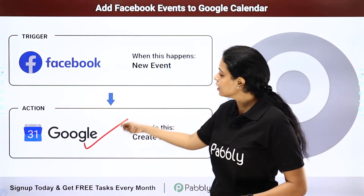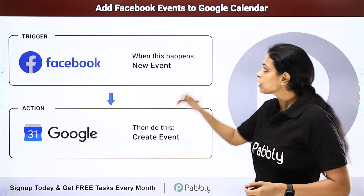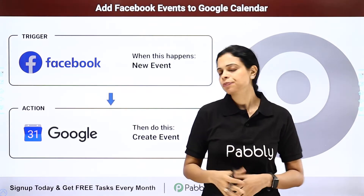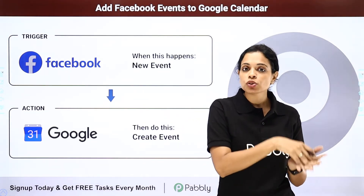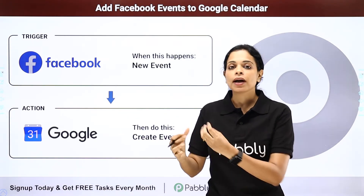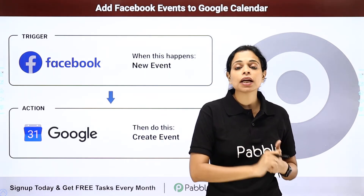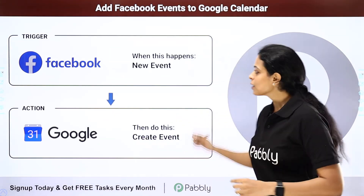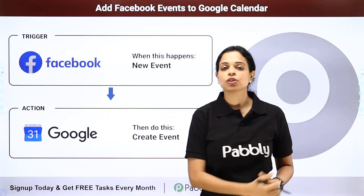The last one is Facebook and Google Calendar. You can add Facebook events to Google Calendar — so whenever there is a new event posted on Facebook, it will automatically become part of your Google Calendar. This is going to remind you, save you time, and help you not miss important events. The trigger application would be Facebook and the action application would be Google Calendar.